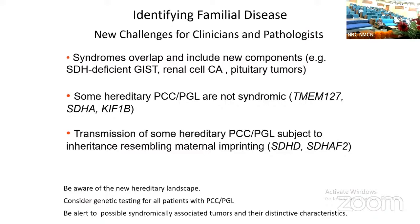Transmission of some hereditary pheochromocytomas and paragangliomas is subject to inheritance resembling maternal imprinting, so that paragangliomas caused by SDHD or SDHAF2 mutations can be transmitted in terms of susceptibility by either the mother or the father, but the disease becomes penetrant only if transmitted by the father. As a consequence, whole generations of patients with hereditary susceptibility to these tumors can be missed. That is the reason it took so long for SDHD mutations to be identified as a common cause of hereditary head and neck paragangliomas.